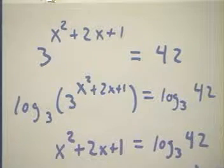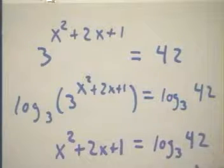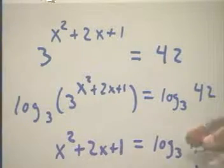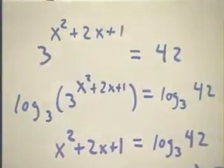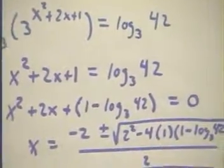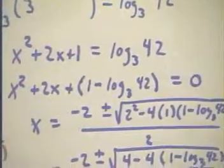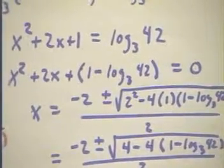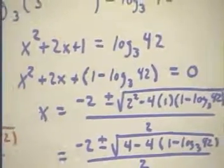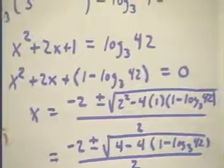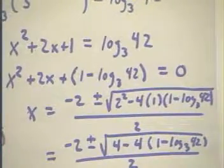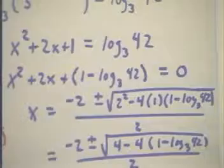Log to the base 3 of 42 is just a number. We could, at this point, if we wished, punch this number into our calculator and approximate it and write down a decimal approximation, but we're going to proceed to solve this exactly. And when we do that, we don't write an approximation of log base 3 of 42. We just write log base 3 of 42.